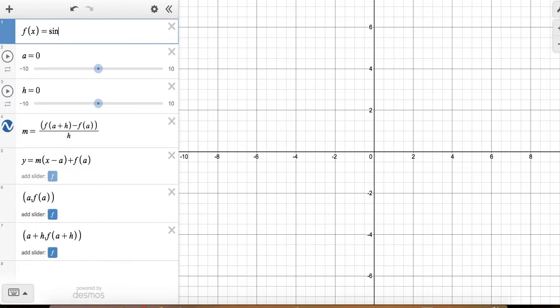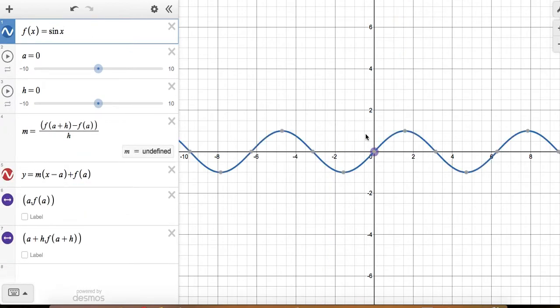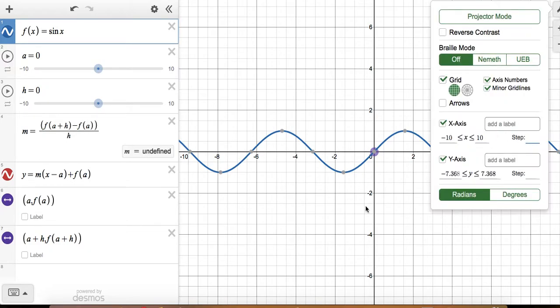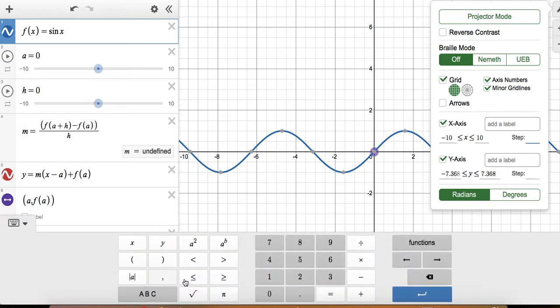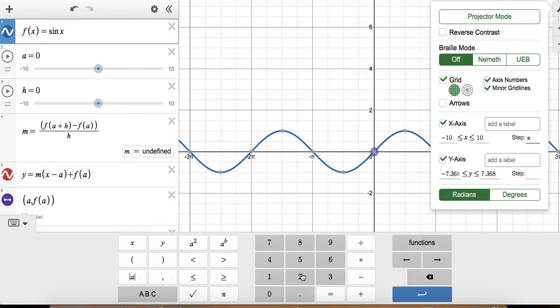So if we change this one to sine x, there it is at pi over 2, and so I'm just gonna change the steps here to pi over 2, so we can see the values here.